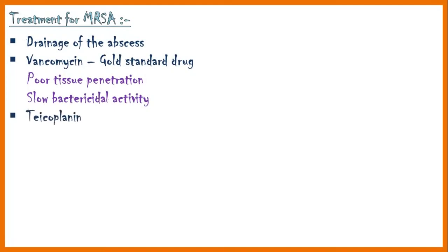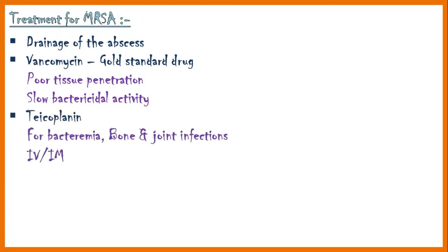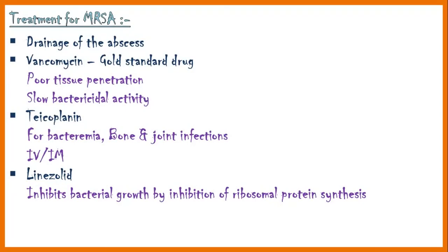Teicoplanin is used to treat bacteremia and bone and joint infections, and it can be given as an intravenous or intramuscular injection. Linezolid is another option, and it inhibits bacterial growth by inhibition of ribosomal protein synthesis. However, it is a bacteriostatic drug and does not kill the organism. It can be given orally or as an intravenous injection.